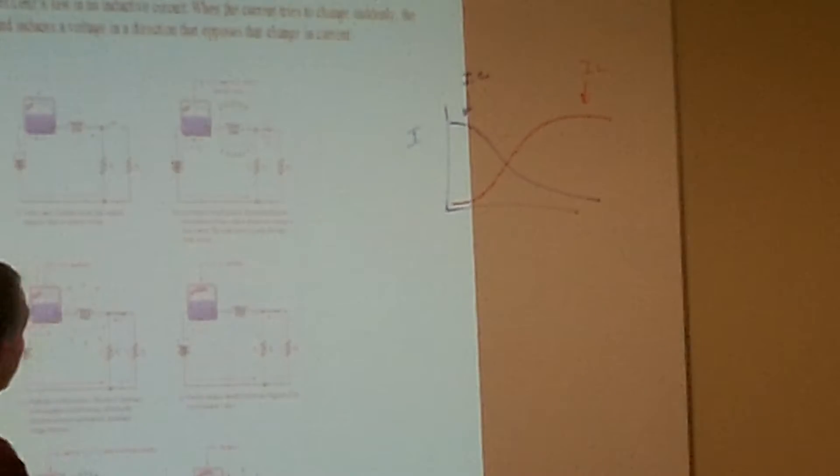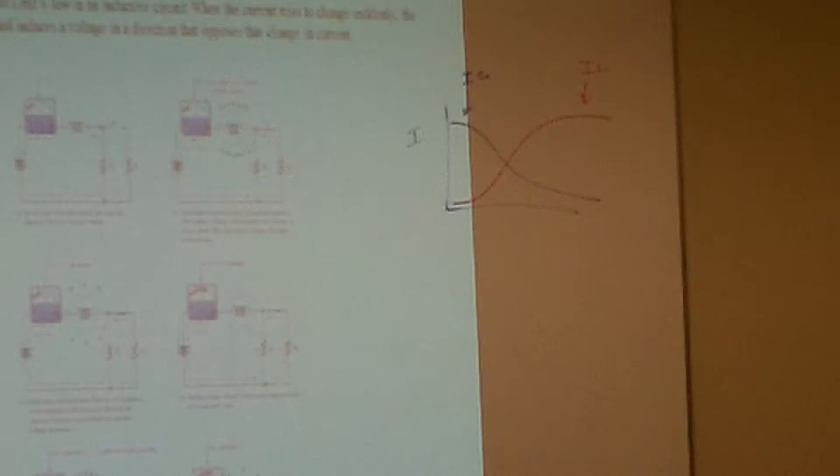An inductor acts like it's open when I first apply voltage to it, and then it acts like a short after a certain amount of time. A capacitor acts like it's short first, then it acts like it's open. These two are just the opposite of one another.